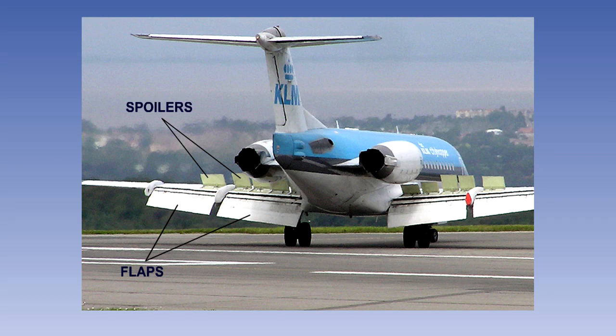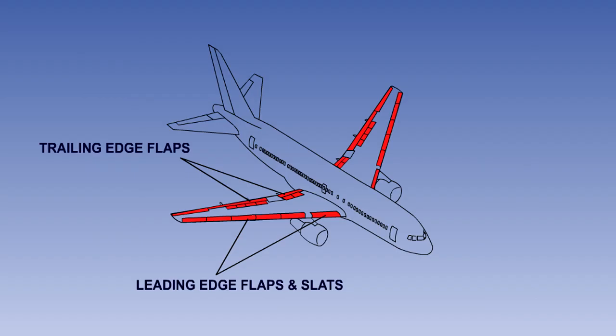The secondary flight controls consist of lift augmentation devices — flaps and slats — lift dumping devices, spoilers except when they are used for roll control, and air brakes and trimming controls. Some or all of these devices may be fitted to a particular aircraft. In this lesson we will look at the operation of trailing edge flaps, leading edge flaps and slats.